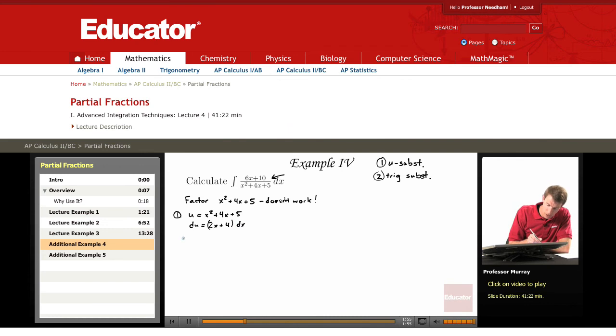And so what we'd like to do is see if we have du in the numerator, and we don't because we have 6x plus 10 instead of 2x plus 4. So we're going to write 6x plus 10 over x squared plus 4x plus 5.